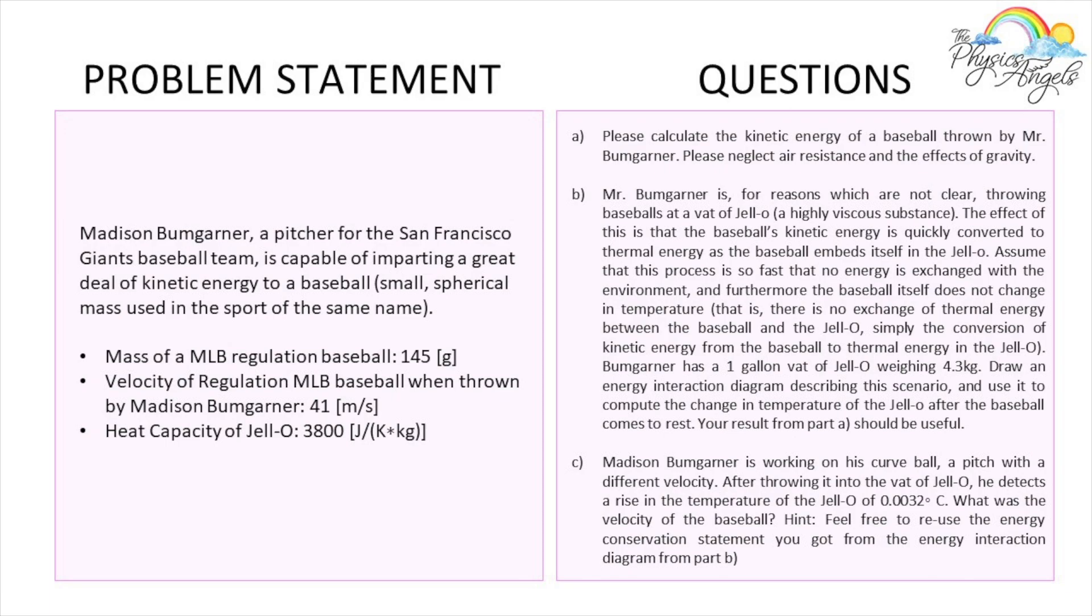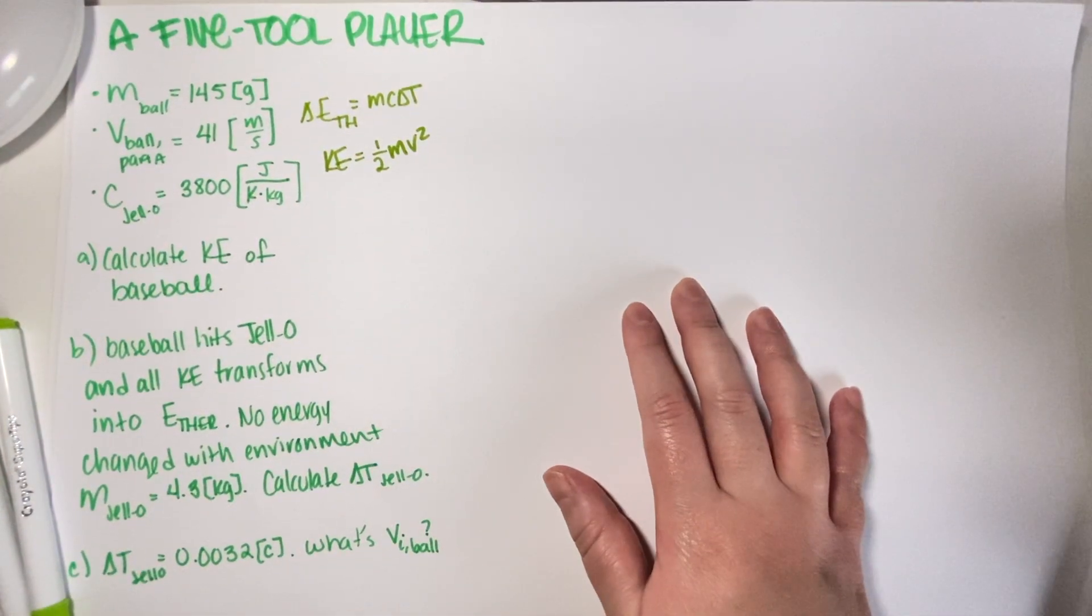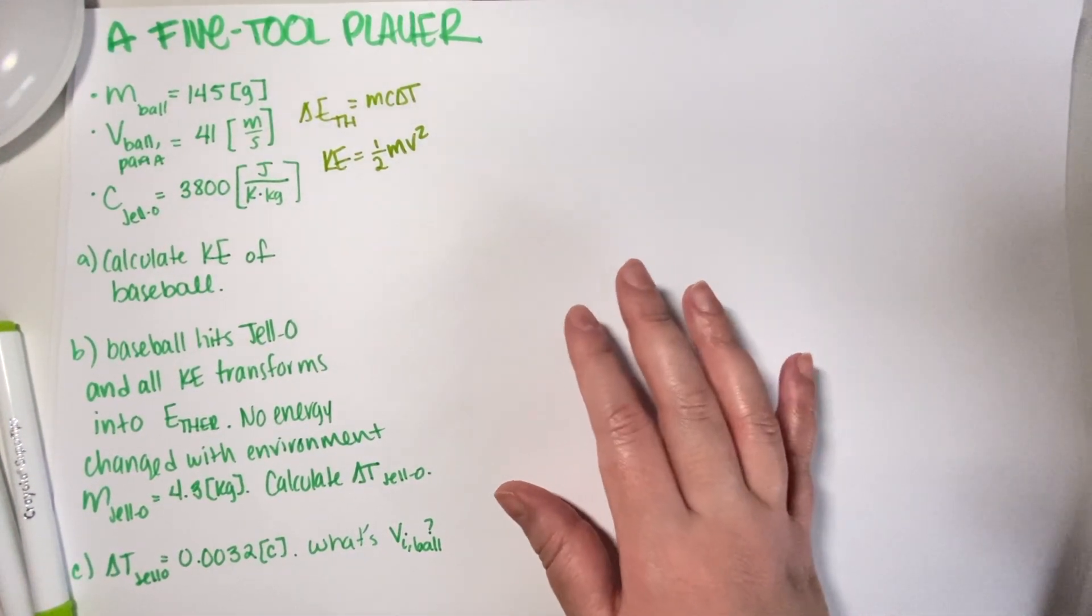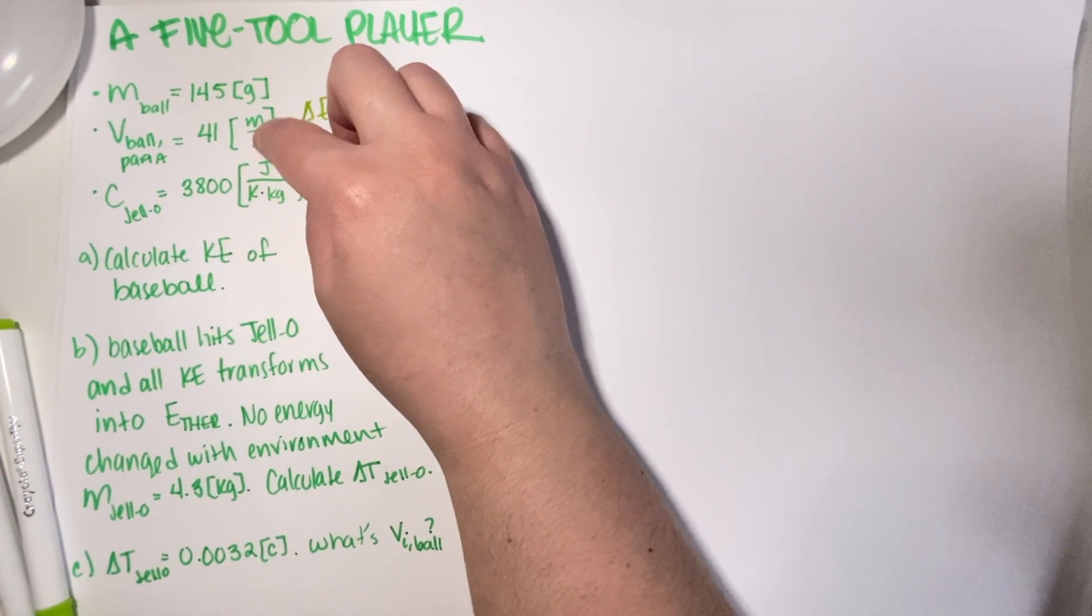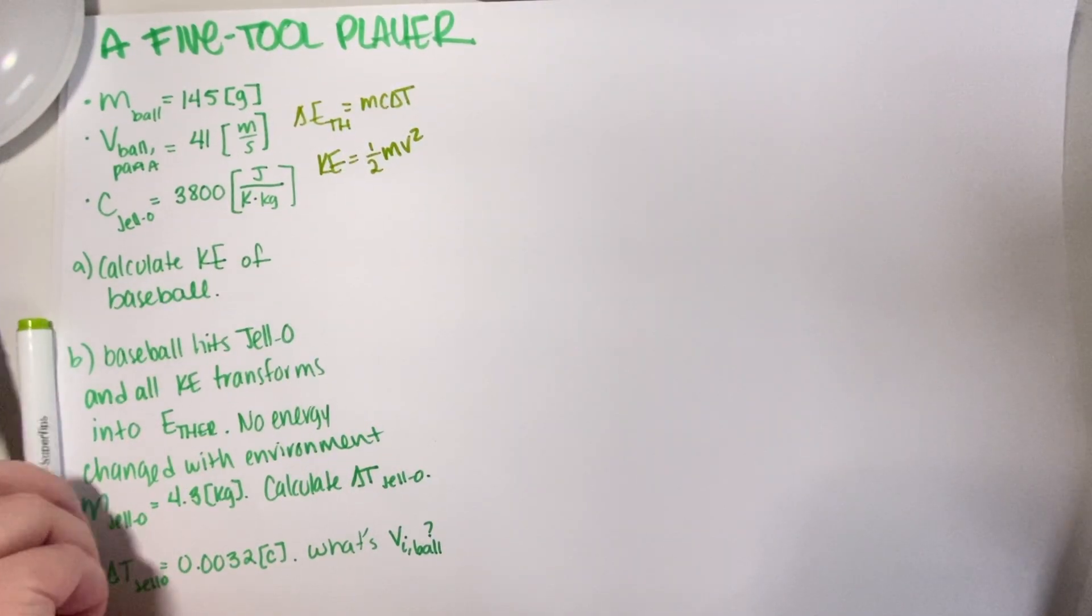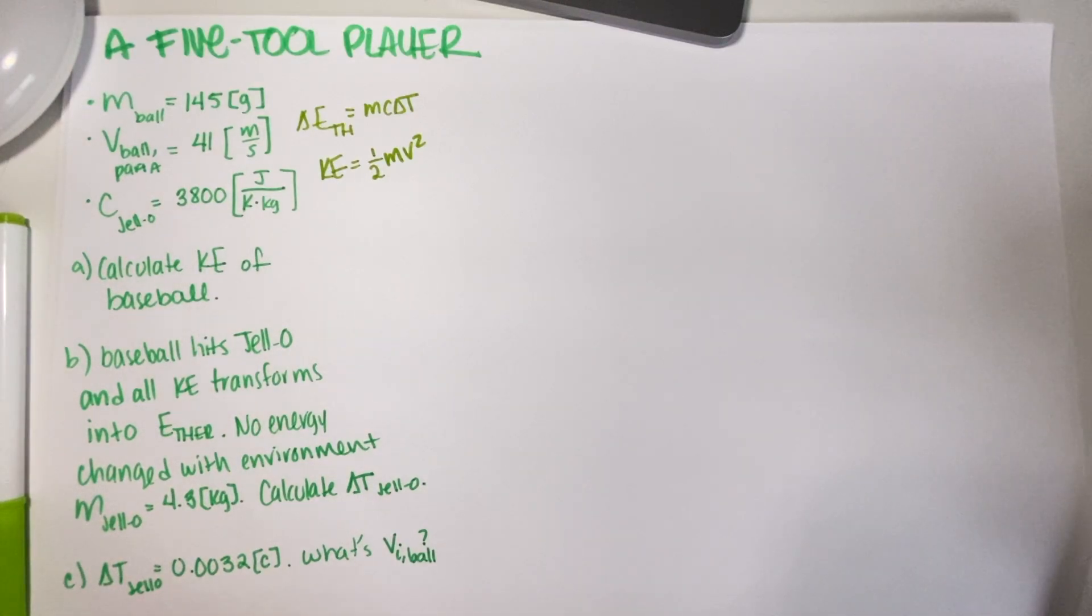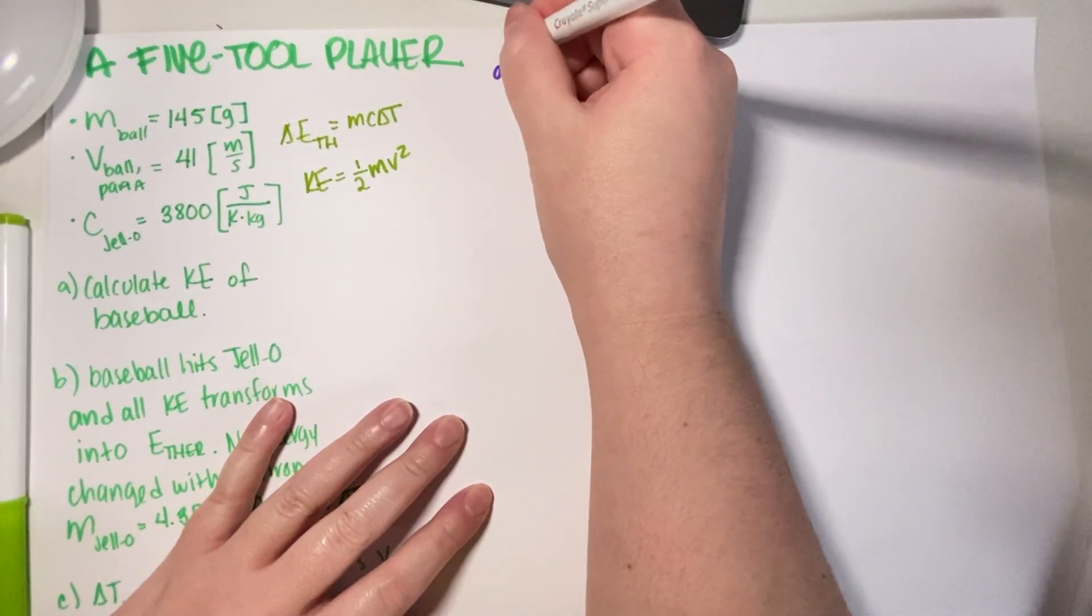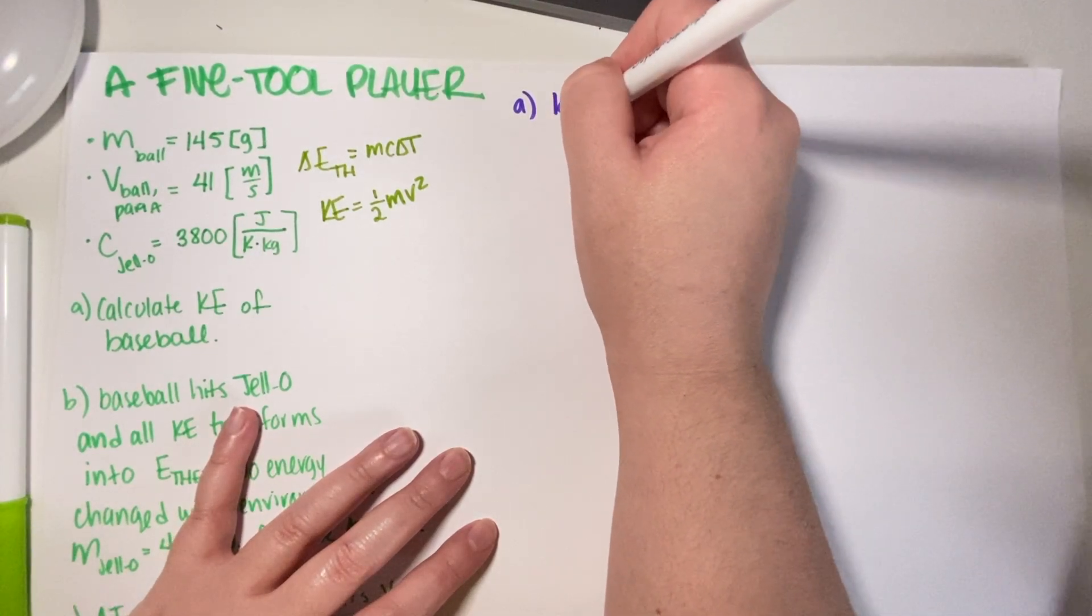As you can see, I have everything over here. For Part A, I have my mass of the baseball and my velocity. Should be easy enough. All I have to do is substitute these equations.